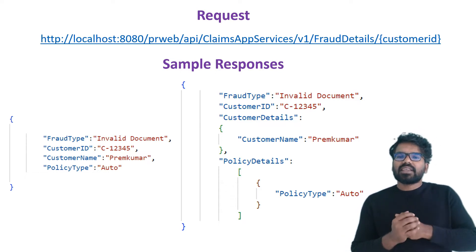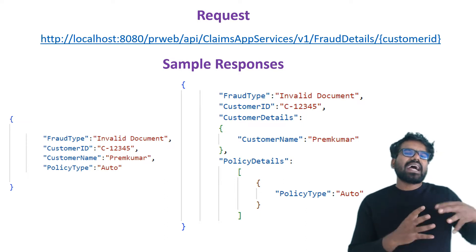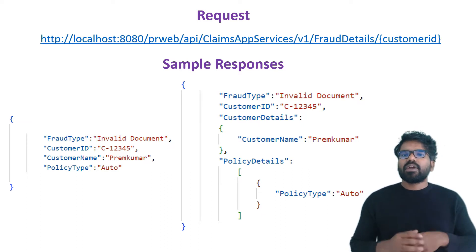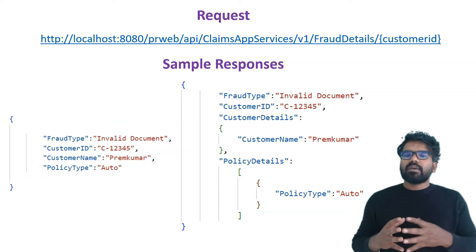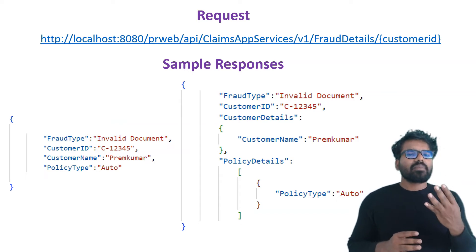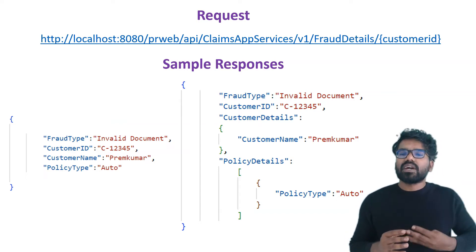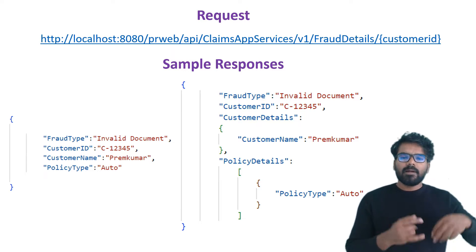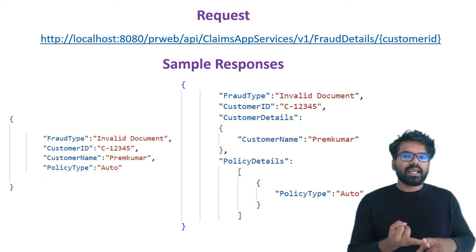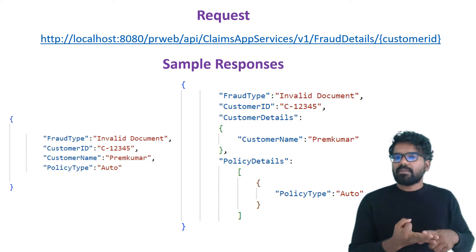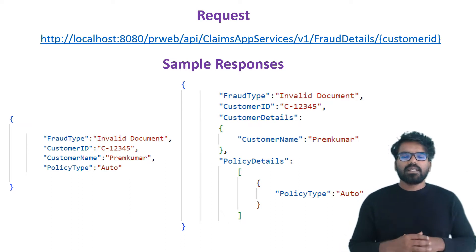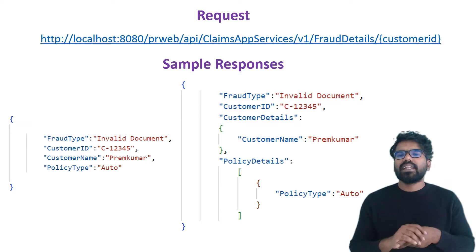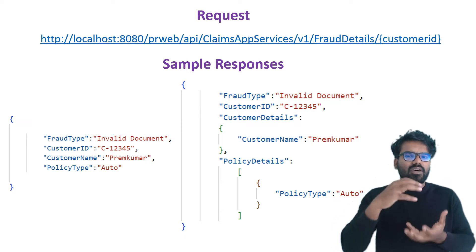External applications may be interested in that data, so that is why we are going to create our own service REST exposing these fraud details. We made the customer ID the input and it is going to come in the resource param — I don't have a query string, I just made it as the resource param. For the response, I can give all the attributes that I store into the data type, the fraudulent check. The data type stores only four attributes: fraud type, customer ID, customer name, and policy type.